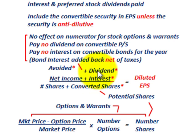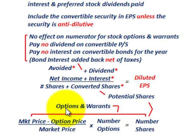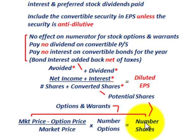The dividend didn't involve any tax deduction, so we add that back at face value. For options or warrants, we use a formula to determine potential converted shares: take the market price per share minus the option price, divide by the market price, then multiply by the number of options or warrants outstanding.